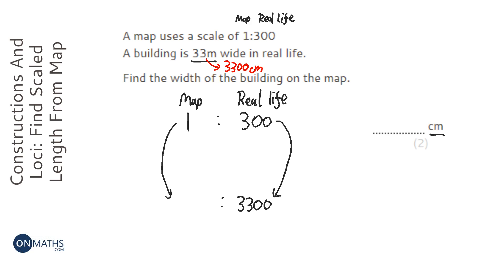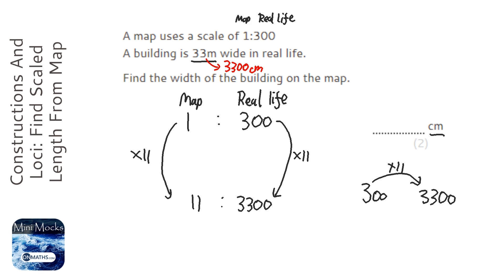I probably would do 3,300 divided by 300 in the calculator, and that says we times it by 11. If you think about it, if you cut off the hundreds, how do you get from 3 to 33? We times by 11. So 300 to 3,300 will be exactly the same. We do the same to this side, which is 11. So this could be 11 centimeters on the map.